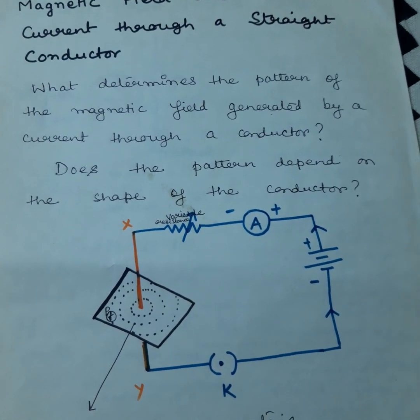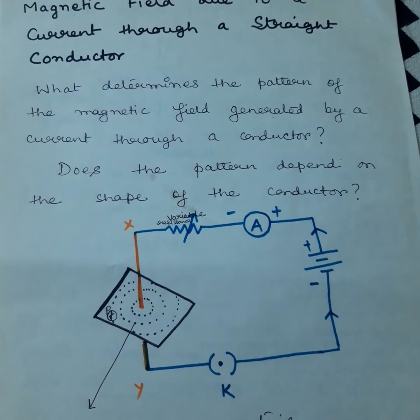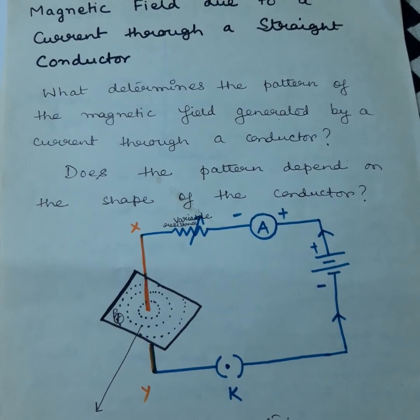Does the pattern depend on the shape of the conductor? Many questions arise: what is the factor that determines the pattern? Conductors can be of many types of shapes — it may be cylindrical or spherical. So does the shape of the conductor determine that pattern?